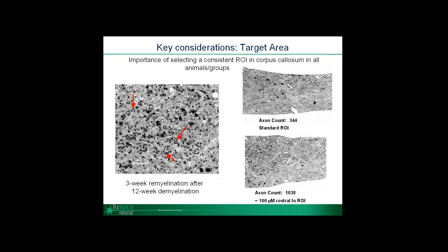To highlight this point further, here's an example of an ROI we measure in the corpus callosum stained with PPD. You can see both large and small myelinated axons that show up as small dark profiles. We've done extensive studies to narrow down the correct region of interest. In our standard region we get an axon count of 344 myelinated axons, and animal-to-animal this is very consistent. However, if we take a region even 100 microns rostrally, this can lead to dramatically different results of over 1,000 axons. It's important when comparing animal-to-animal and group-to-group that you're always comparing the same ROI.